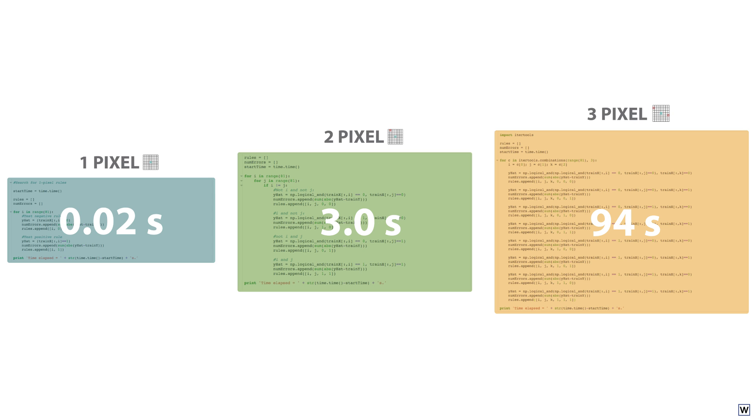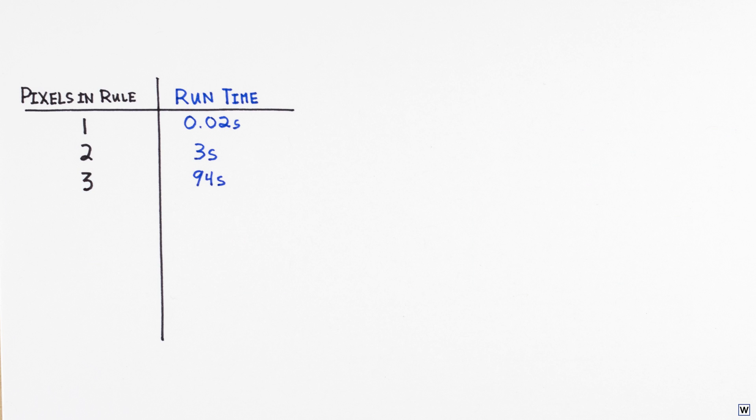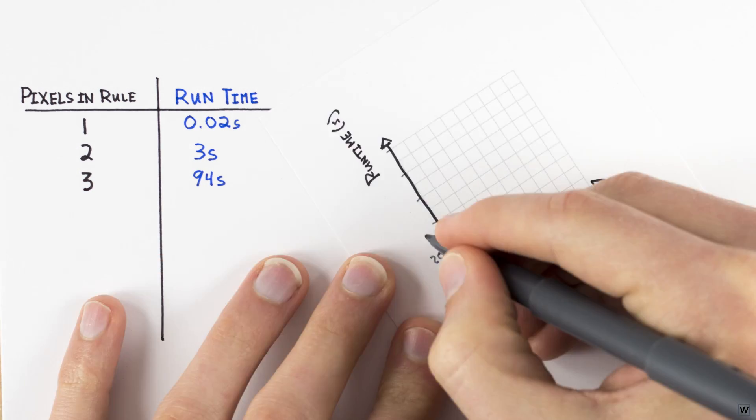And while none of these times are problematic individually, they do point to an alarming trend. Our run times of course increase as the complexity of our rules increase, but what's really troubling is the rate at which our run times increase.